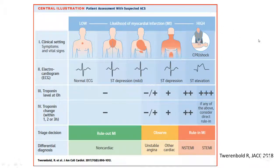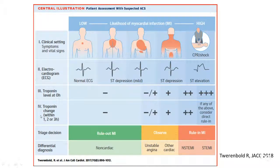Previously, we would do the first troponin in the ER and repeat it at six hours, then again at six hours. Now, the recommendation with high sensitivity troponin is to do one as soon as the patient hits the ER — at time zero — then repeat at one hour, two hours, and three hours. If all of those troponins have been negative, we can rule out a myocardial infarction within four hours.